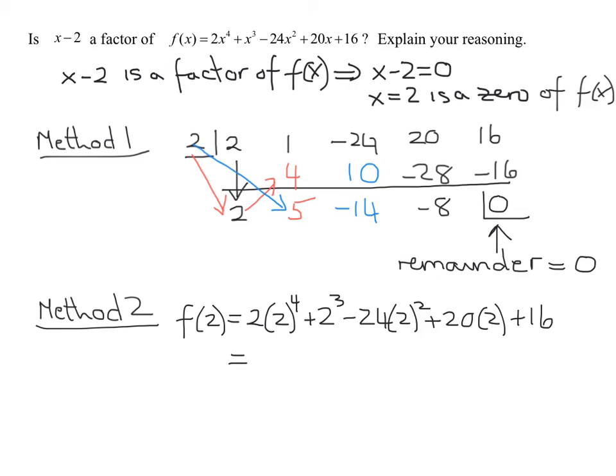So now it's just arithmetic. Remember, we do exponential first, so 2 to the 4th is 16, so it's 2 times 16. 2 cubed is 8, minus 24 times 2 squared is 4, plus 40, plus 16.